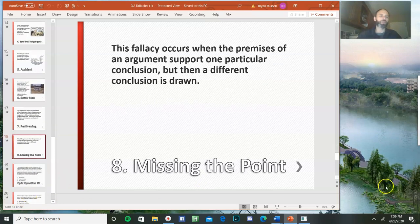The final fallacy that we're going to cover this lecture is missing the point. This fallacy occurs when the premises of an argument support one particular conclusion, but then a different conclusion is drawn. Now this can be a big catch-all fallacy. A lot of the earlier fallacies could be characterized as missing the point. Missing the point is a pretty general fallacy. And if we're going to accuse somebody of missing the point, then we should be able to supply the conclusion that the premises actually would lead to, and then note how the one that they drew was different.